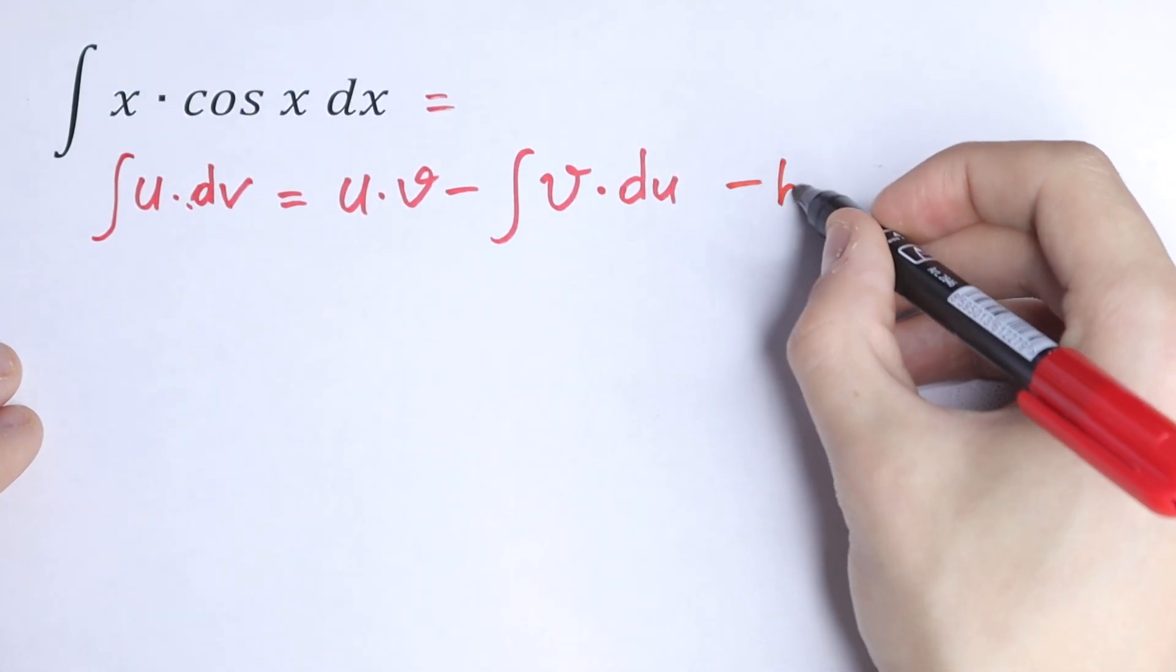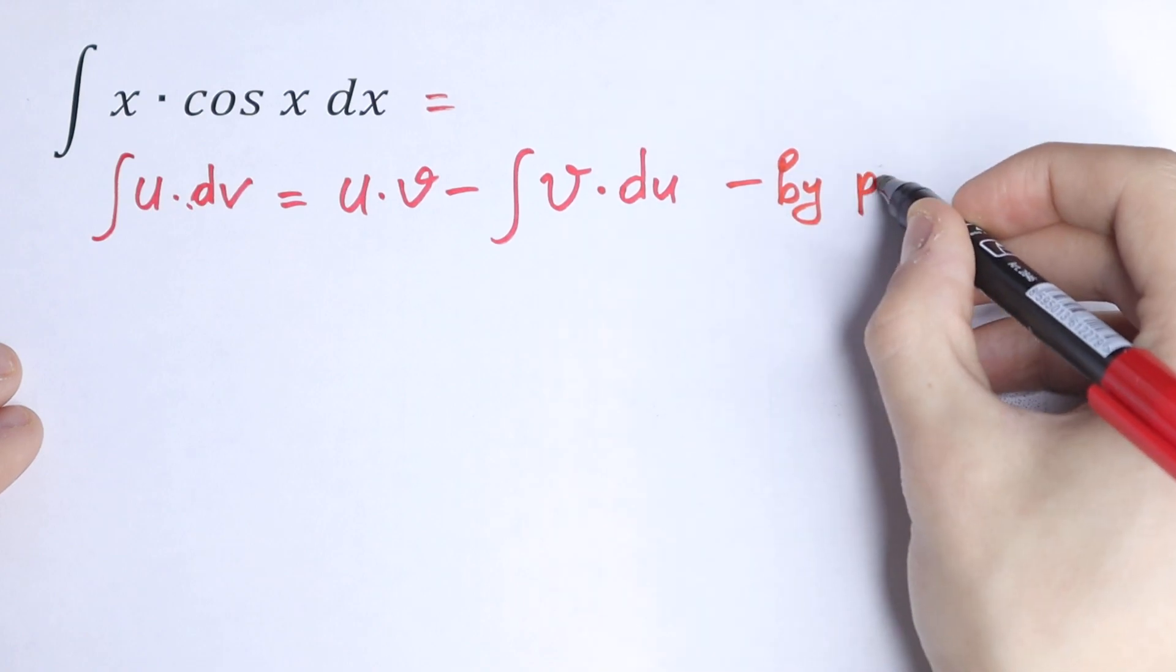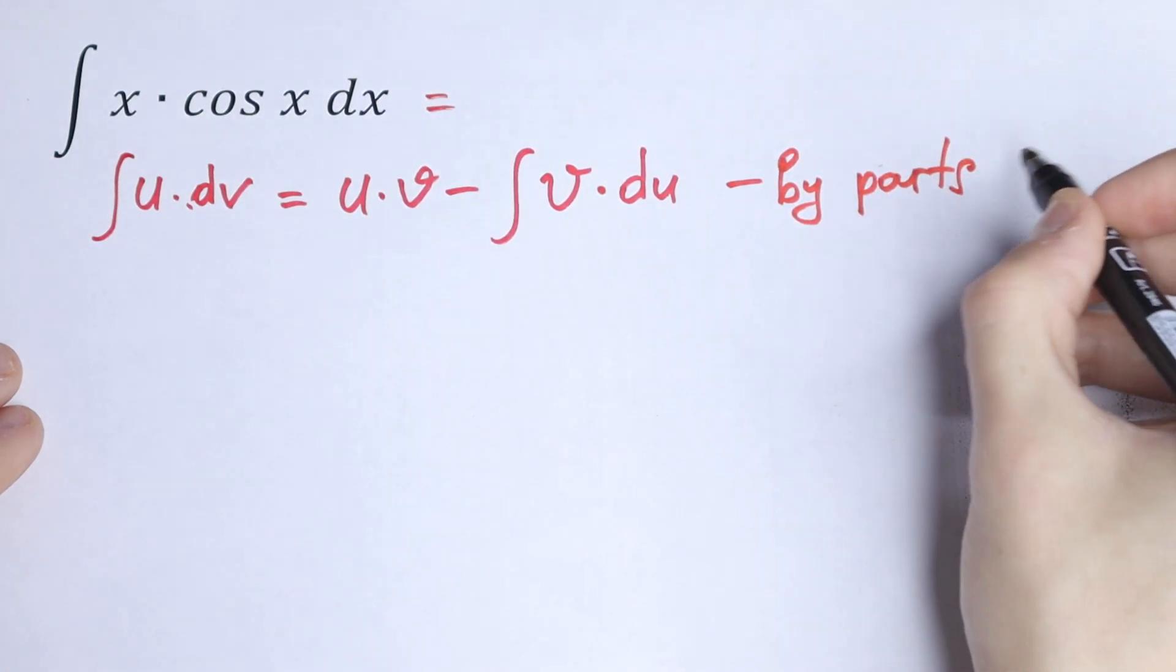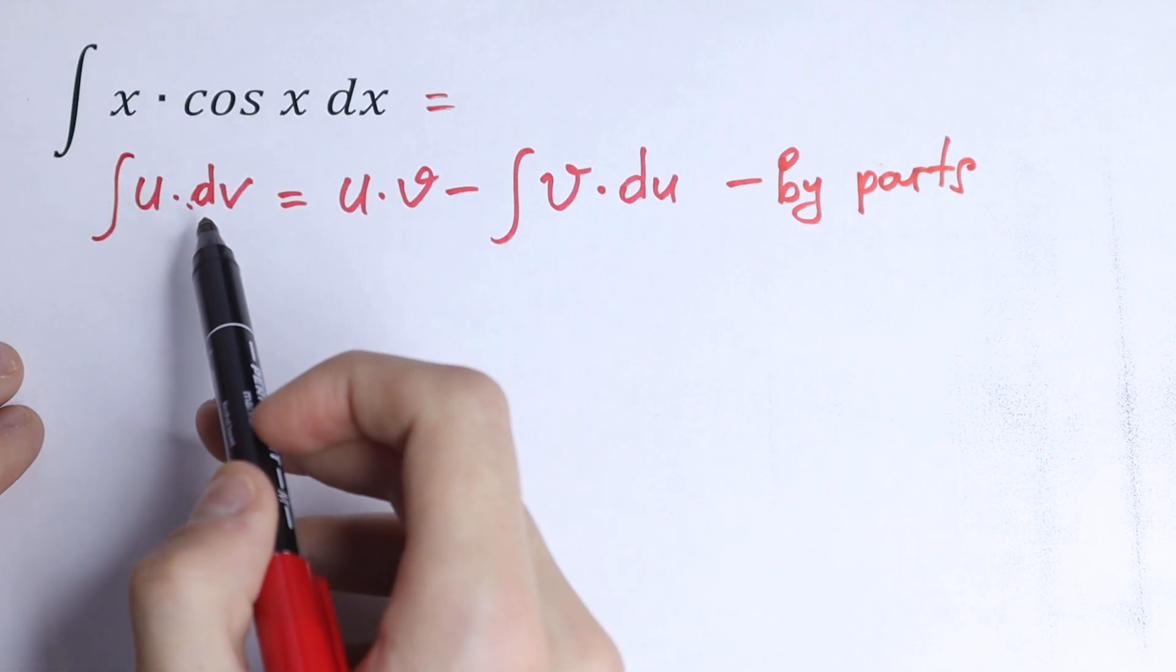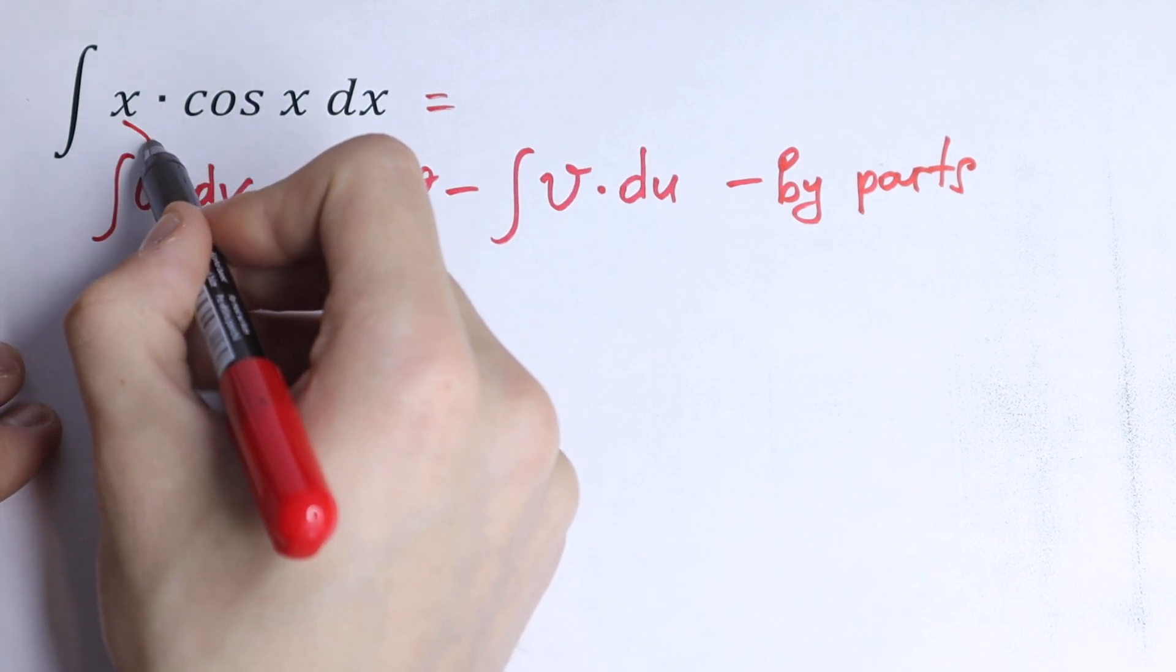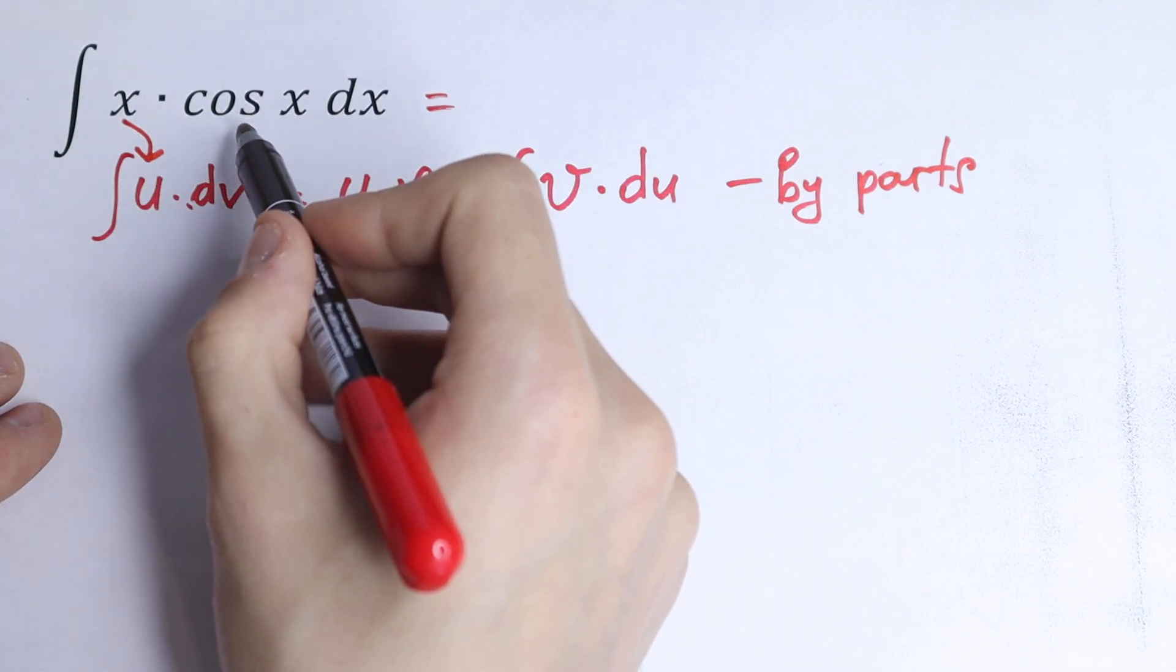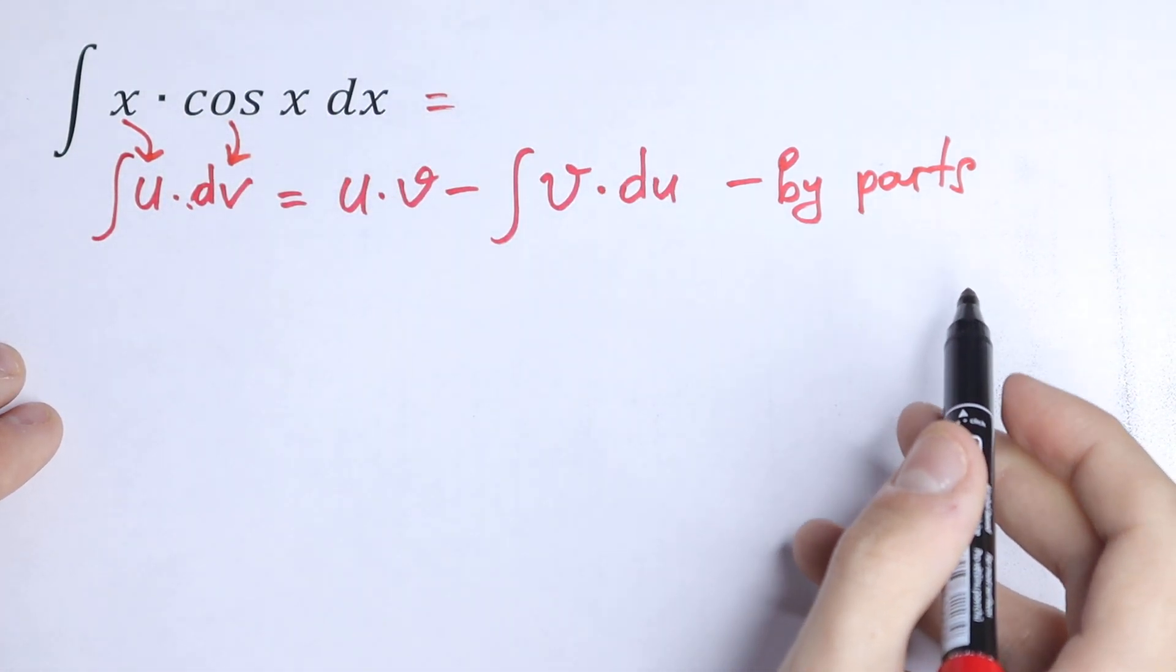This is integration by parts. So let's do this. Let's try to express x cosine x as u and dv. Let x be our u and cosine x will be our dv.